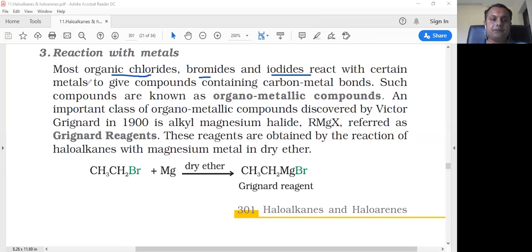Such compounds are known as organometallic compounds. RMgX means R is the alkyl group which is organic, Mg is the metallic group, so it is called an organometallic compound.